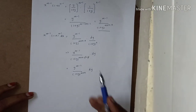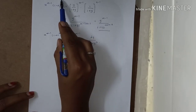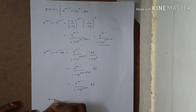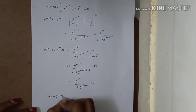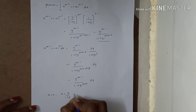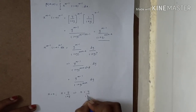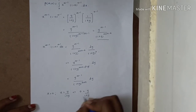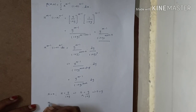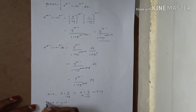Now we apply the limits. The original limits are x from 0 to 1. When x equals 0, using the substitution x equals y divided by 1 plus y, we get 0 equals y divided by 1 plus y, which gives y equals 0. So the first limit is y equals 0.